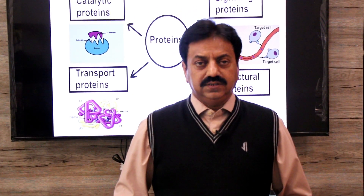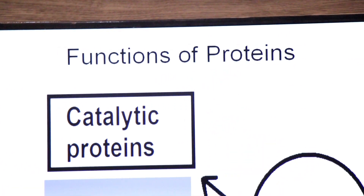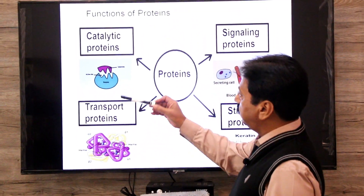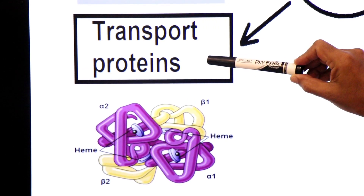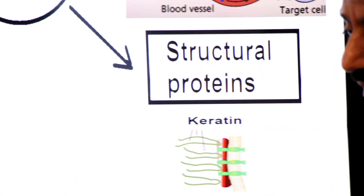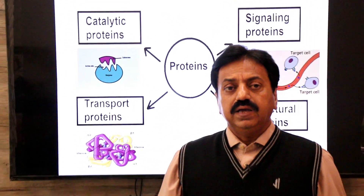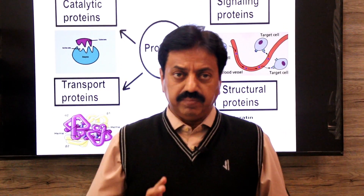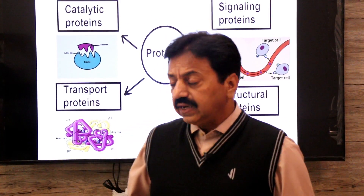Assalamualaikum, Namaskar dear students. Today we are going to talk about functions of proteins. Proteins are classified according to their function. For example, enzymes are catalytic proteins, hemoglobin is a transport protein, hormones are signaling proteins, and keratin is a structural protein. Catalyst is a substance which speeds up a chemical reaction, and the majority of enzymes are proteins.